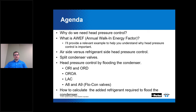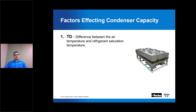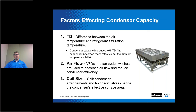There are three factors that affect condenser capacity: your TD, your airflow, and your coil size. TD is the difference between the air temperature and the refrigerant saturation temperature in the condenser. As your TD increases, your condenser capacity increases as well — the condenser actually becomes more effective as your ambient temperature falls, because as ambient temperature falls, TD increases.